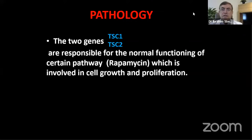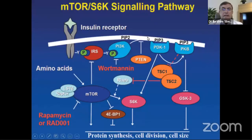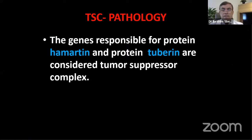There are two genes, each located at a certain locus, both important for maintaining cell growth and proliferation. They are called tuberous sclerosis complex one and tuberous sclerosis complex two. These genes produce the proteins hamartine and tuberin, which suppress tumor formation. When there is a genetic deformation of hamartine and tuberin, tumors grow.